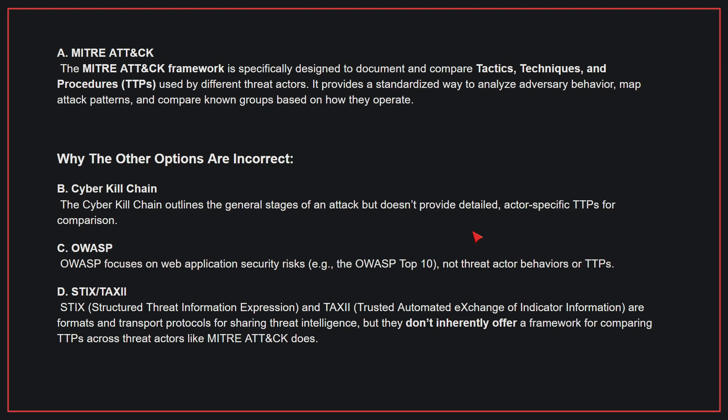Why the other options are incorrect: B. Cyber Kill Chain — outlines the general stages of an attack, but doesn't provide detailed, actor-specific TTPs for comparison. C. OWASP — focuses on web application security risks, not threat actor behaviors or TTPs. D. STIX/TAXII — these are formats and transport protocols for sharing threat intelligence, but they don't inherently offer a framework for comparing TTPs across threat actors like MITRE ATT&CK does.